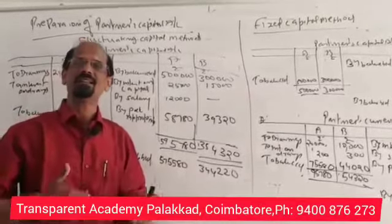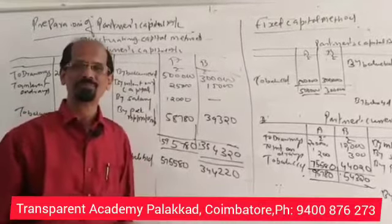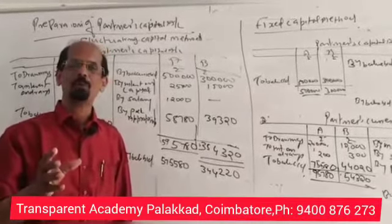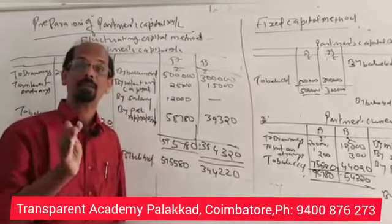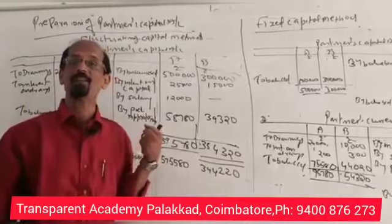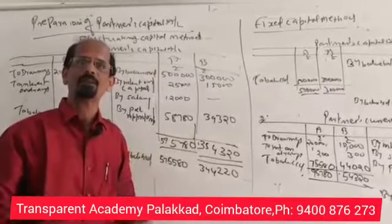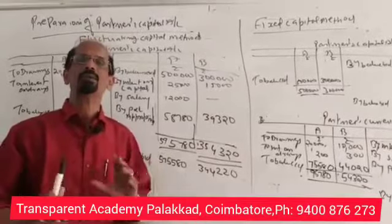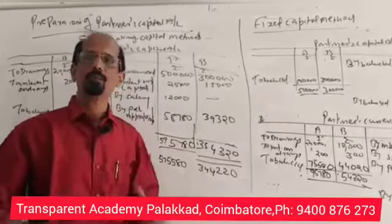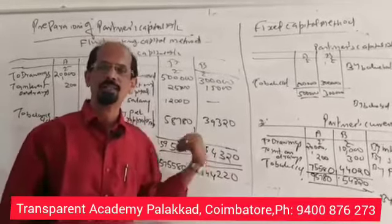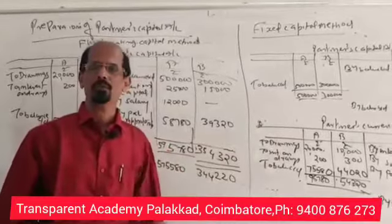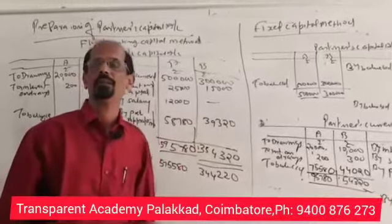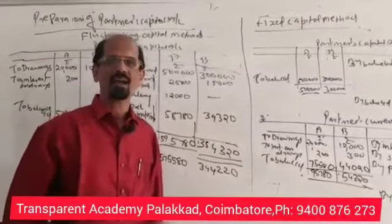We are going to discuss the P&L Appropriation Account and the Fixed Capital Method. We will change the capital balance after each year. We are going to solve that problem. The P&L Appropriation Account is going to be divided by profit. If we have to prepare a capital account in the fluctuating capital method, this is how we prepare it.